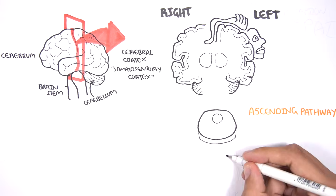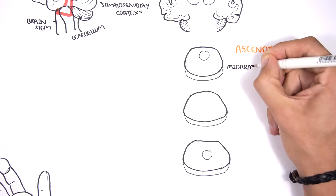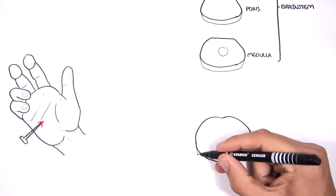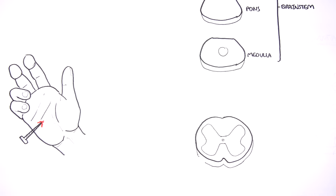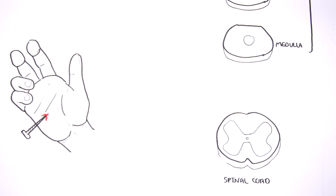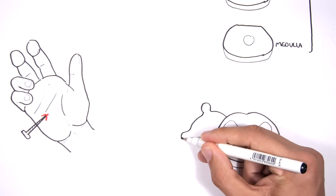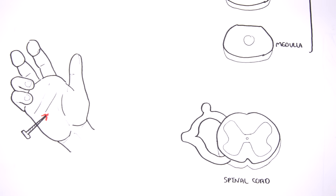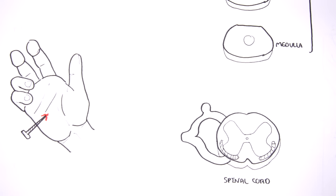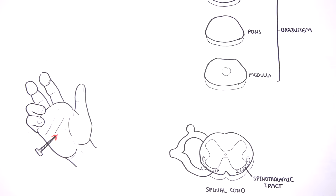The brain continues on and joins with the brainstem, which is made up of three main components: the midbrain, pons, and medulla. The brainstem then continues on and becomes the spinal cord. Here we are only looking at one section of the spinal cord — let's say this is a cervical spine area. The spinal cord has nerves coming out from the anterior root and nerves coming in from the posterior root. Different tracts exist within the spinal cord; one tract important in the pain pathway is the spinothalamic tract, made up of the lateral and anterior spinothalamic tracts.